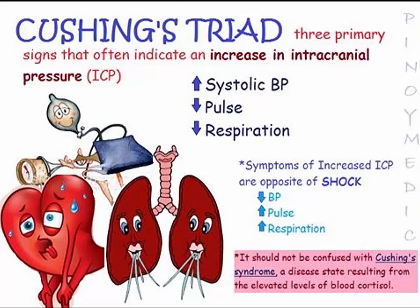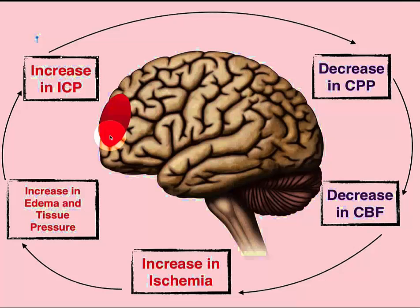Treatment modalities for increased ICP include maintaining airway, breathing, and circulation. Controlled ventilation can induce hypocapnia but can cause vasoconstriction and reduce cerebral blood flow, so PaCO2 should be 35 plus or minus 2 — that is, 33 to 37 mmHg. Keep ICP less than 15 mmHg and give volume to maintain the wedge at 10 to 15 mmHg or the CVP at 5 to 10. Add vasopressors if needed to maintain mean arterial pressure greater than 90 and to assist with cerebral perfusion pressure. Keep brain temperature between 36 to 37 degrees Celsius.